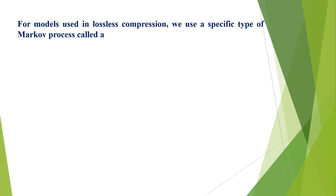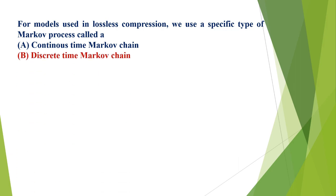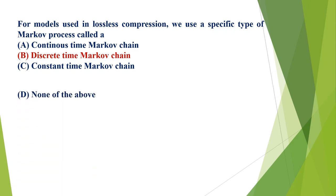For models used in lossless compression, we use a specific type of Markov process called: A) continuous time Markov chain, B) discrete time Markov chain, C) constant time Markov chain, D) none of the above. The correct option is B, discrete time Markov chain.